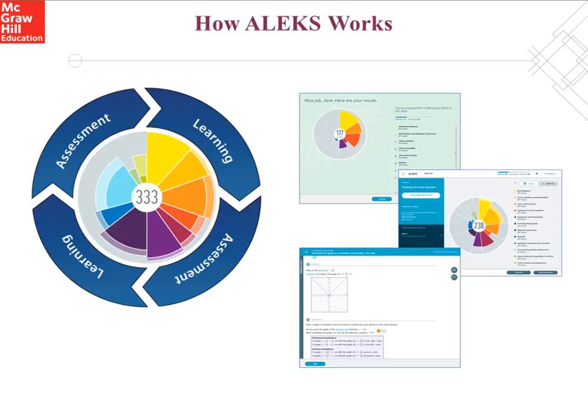Let's take a closer look at how ALEKS interacts with students. ALEKS provides students with a cycle of assessment and learning. The assessment in ALEKS, which is adaptive and open response, determines what each student knows, doesn't know, and is ready to learn — otherwise known as their learning state. The assessment only needs to ask an average of 25 questions to determine this, and relies on empirical data from millions of ALEKS students to make precise inferences about a student's knowledge.